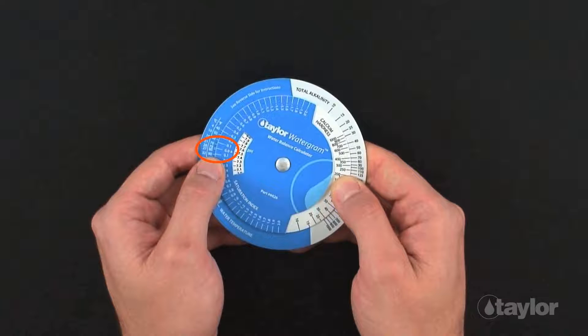The number opposite the temperature is the saturation index. The saturation index, 0.0, indicates the water is balanced.